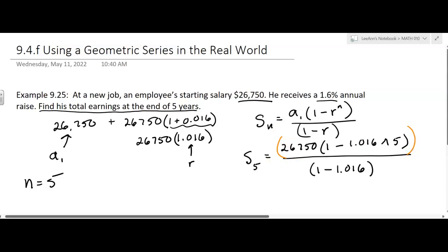Okay, so let's go with that. I'm going to grab my calculator, because I'm not doing this by hand. And then parenthesis, 26,750, parenthesis, 1 minus 1.016 to the 5th power, parenthesis, parenthesis, divided by parenthesis, 1 minus 1.016, parenthesis.